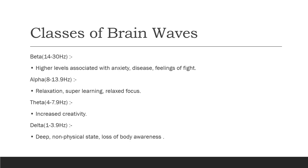Let us classify the brain waves. The brain waves can be classified into four categories: beta waves, alpha waves, theta waves, and delta waves. Beta waves are the waves of higher frequency, namely 14 to 30 Hz, and are associated with higher levels of anxiety, disease, or feelings of fight.